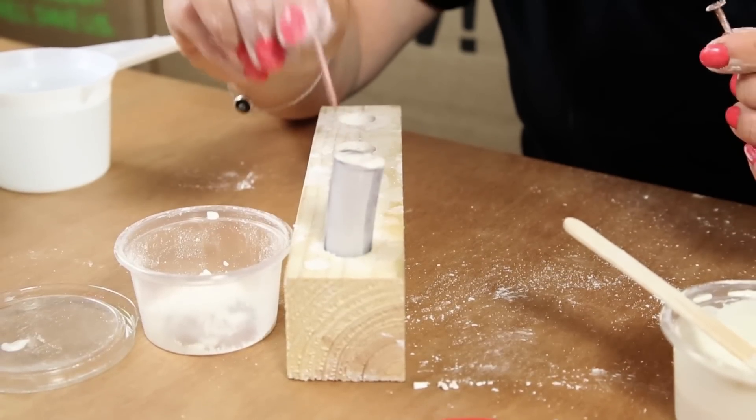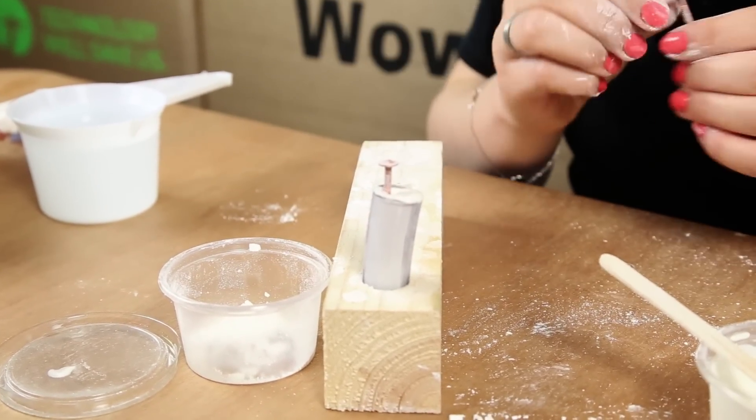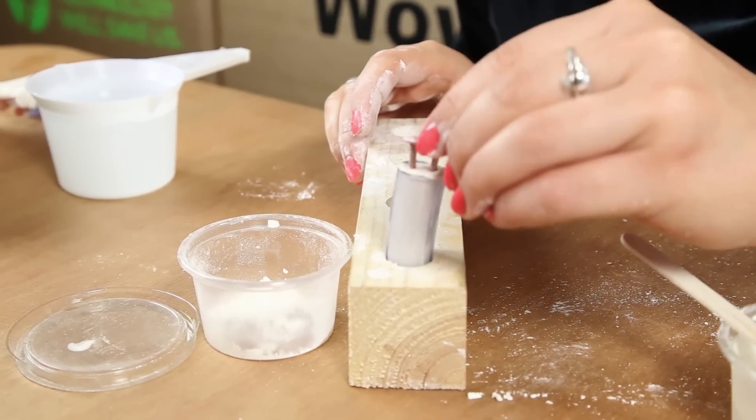So now after leaving it for a while, if we put it in, we can see that it should stay. So you need to wait sometimes for the plaster to harden a little bit before you put the nails in.